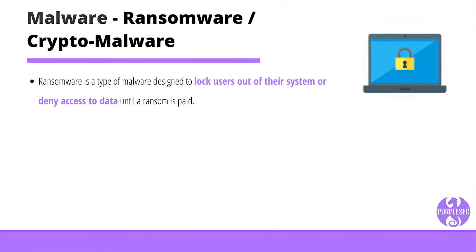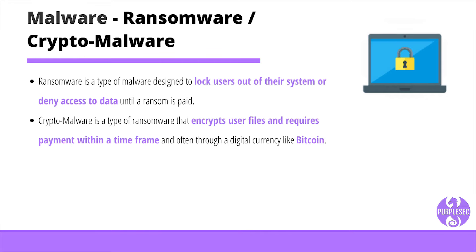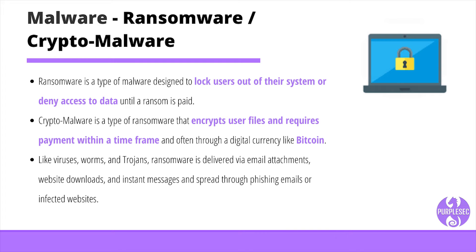Ransomware is a type of malware designed to lock users out of their system or deny access to data until a ransom is paid. Crypto malware is a type of ransomware that encrypts your files and requires payment within a time frame, often through a digital currency like bitcoin. Ransomware attacks can have a devastating impact — current estimates of the Baltimore ransomware attack put damages at up to $18 million. Like viruses, worms, and trojans, ransomware is delivered via email attachments, website downloads, and instant messages, and spread through phishing emails or infected websites. There is no guarantee that paying the ransom will grant access to your files or data, and the recovery process can be difficult and expensive.